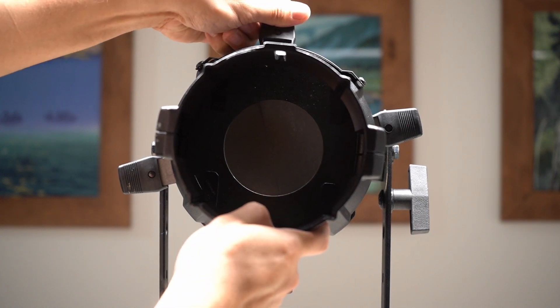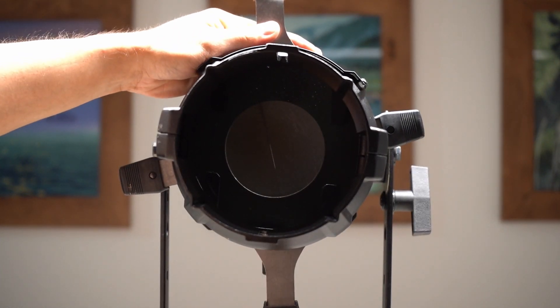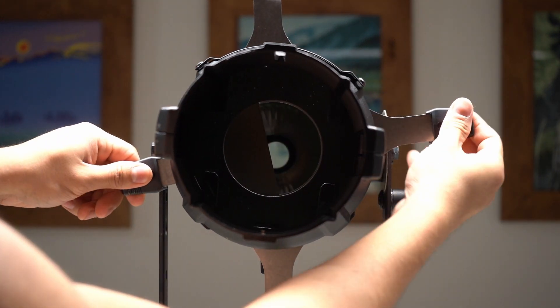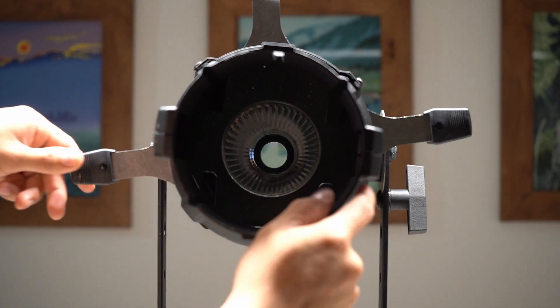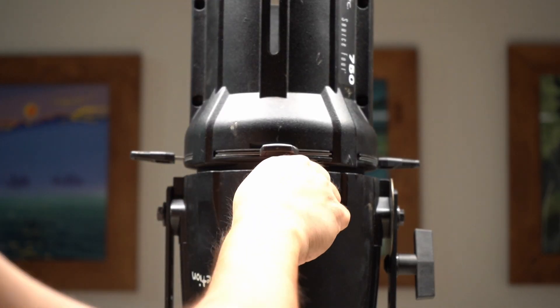The lens barrel contains the shutters and the reflector. The shutters are very important because they control the spill of the light and also the shape of the light. There's also a little screw on the side if you want to loosen it to twist the barrel.